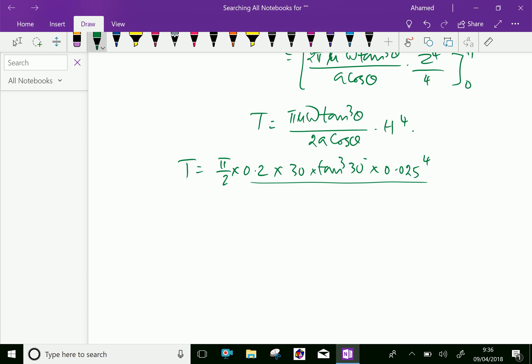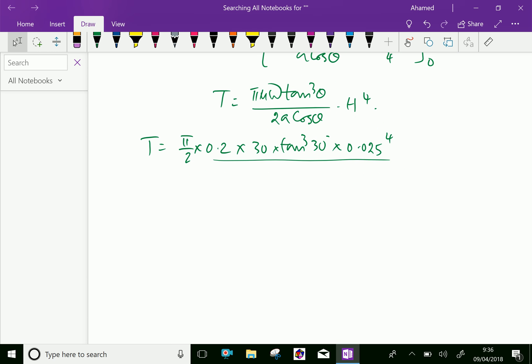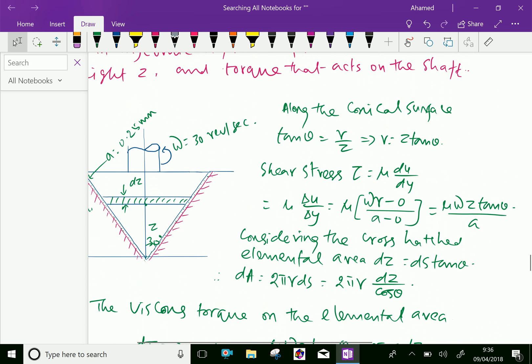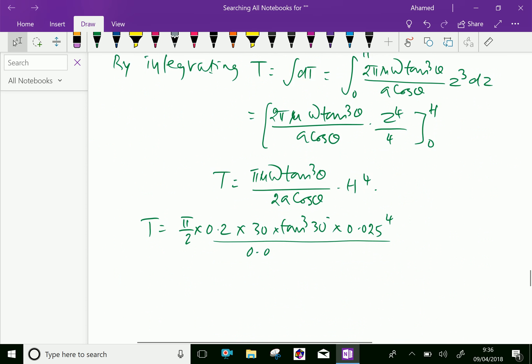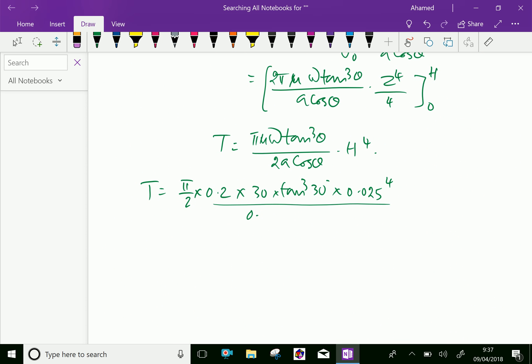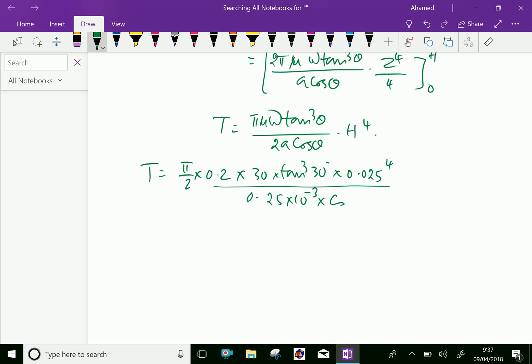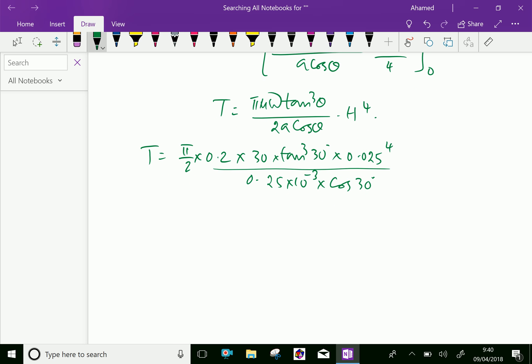A is 0.25 mm means 0.25 into 10 to the power of minus 3, because it is meter, into cos of 30 degree. After calculation, and 30 revolutions per second, you have to convert to radians, you have to multiply with 2 pi.